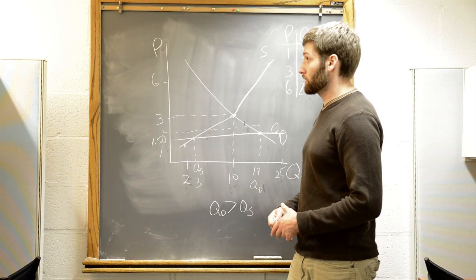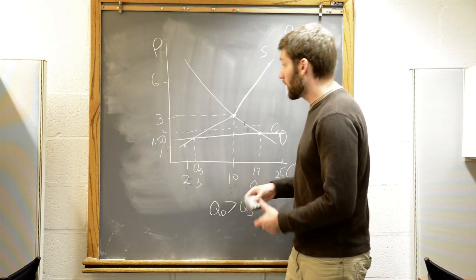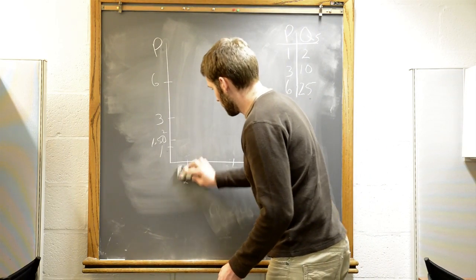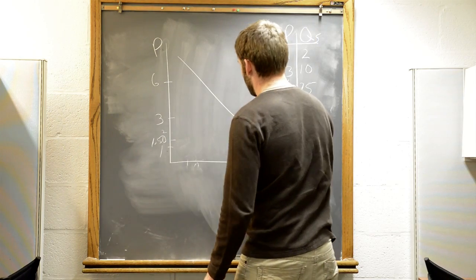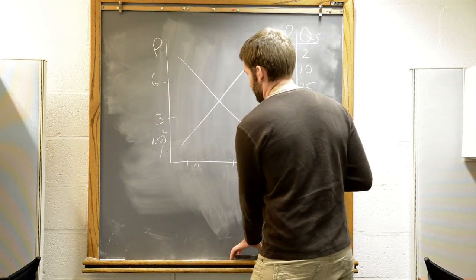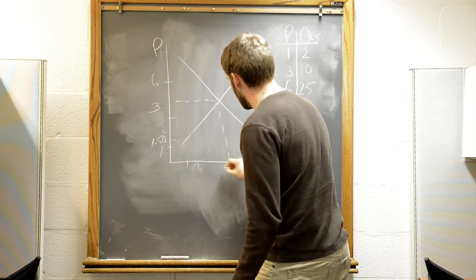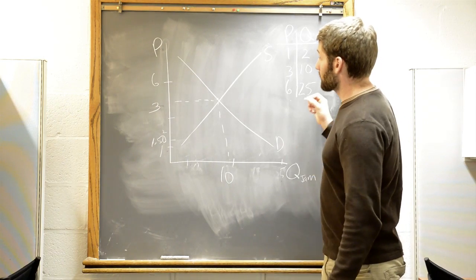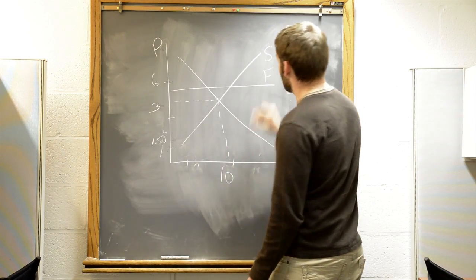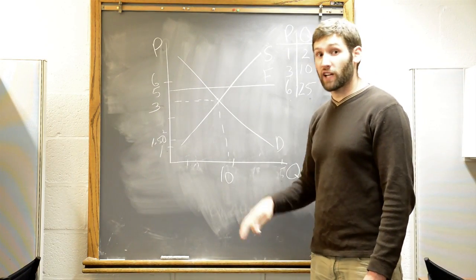What if we were to impose a price floor? So maybe the government comes in and says, we really care about jam producers. We want them to do better. So let's see what that would look like. Again, we have some supply and demand curves. We've got an equilibrium here at $3, 10 units, not drawn to scale. And we impose a price ceiling, or sorry, a price floor right here at $5. Now that price floor stops the price from going lower. So the floor stops you from going lower.